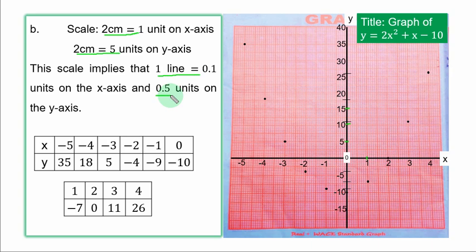By this scale, it means that 1 line is equal to 0.1 on the s axis and 0.5 units on the y axis. In other words, on the y axis, 2 lines will give you 1.